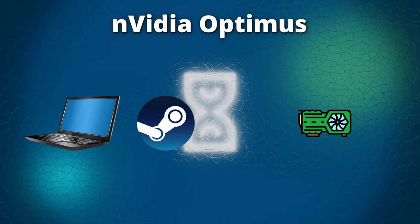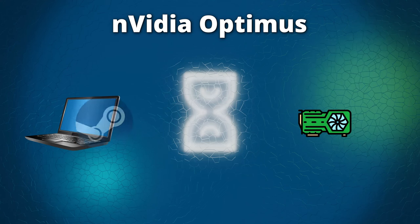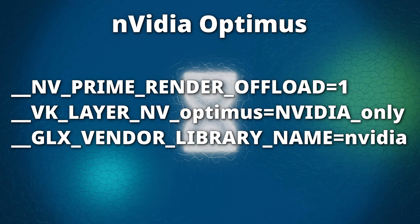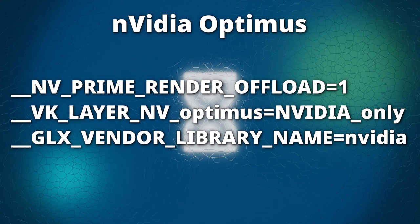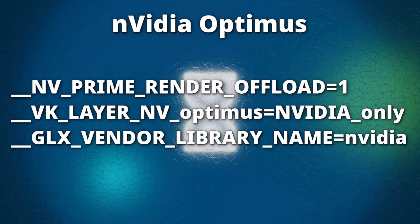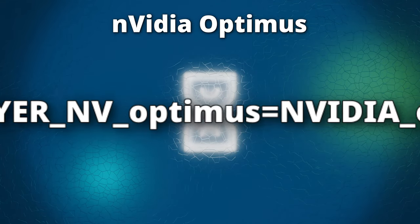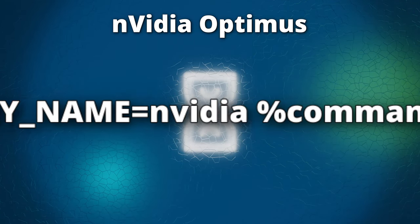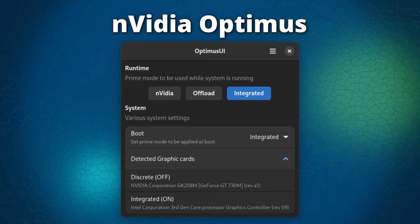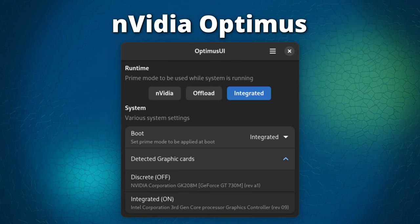If your system runs in offload mode, you can prefix any application with these environment variables to dynamically offload it to the NVIDIA GPU: __NV_PRIME_RENDER_OFFLOAD=1, __VK_LAYER_NV_optimus=NVIDIA_only, and __GLX_VENDOR_LIBRARY_NAME=nvidia. For example, to run Steam on the integrated GPU while launching games on the dGPU, set these as a game launch option suffixed with %command%. If you want a handy GUI for controlling SUSE Prime, I recommend installing Optimus UI as a Flatpak application, which I personally developed for this purpose.